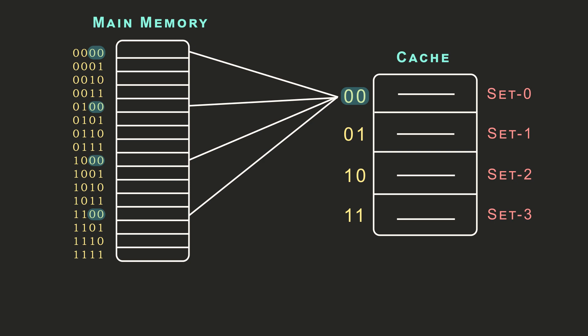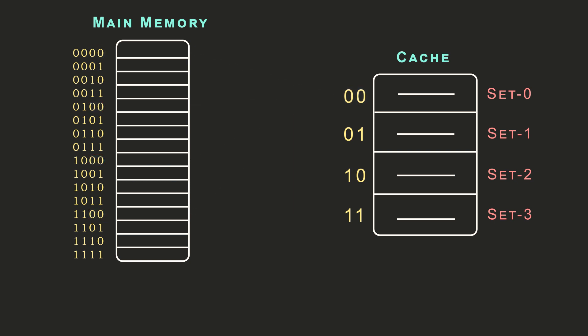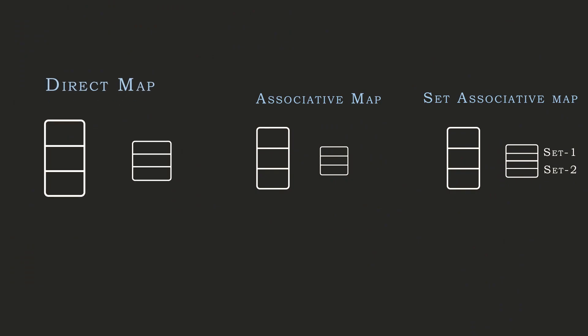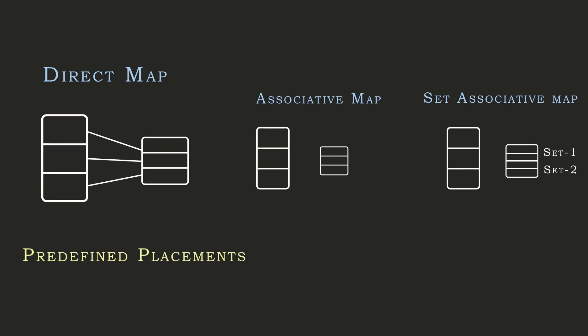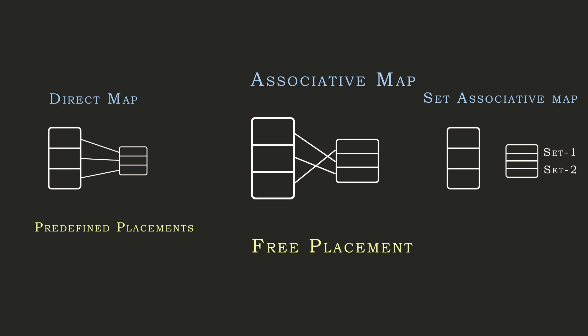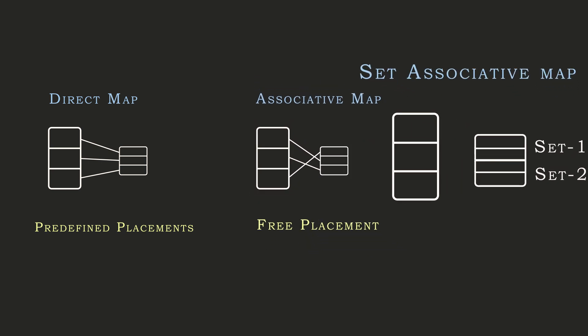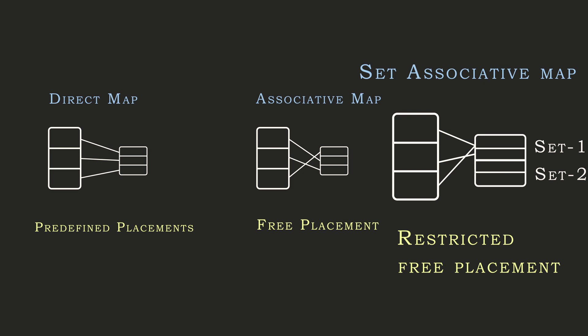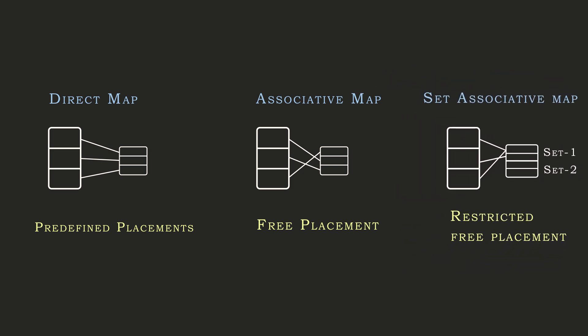Because of the grouping into sets, the search overhead is reduced drastically and performance is improved. To summarize all three: in direct mapping, each data item has a predefined placement location; in associative mapping, there are no restrictions and you can place data anywhere; in set associative mapping, an item is tagged to a set and inside the set placement is free. This is just an outline — each technique will be reviewed in detail in upcoming videos.